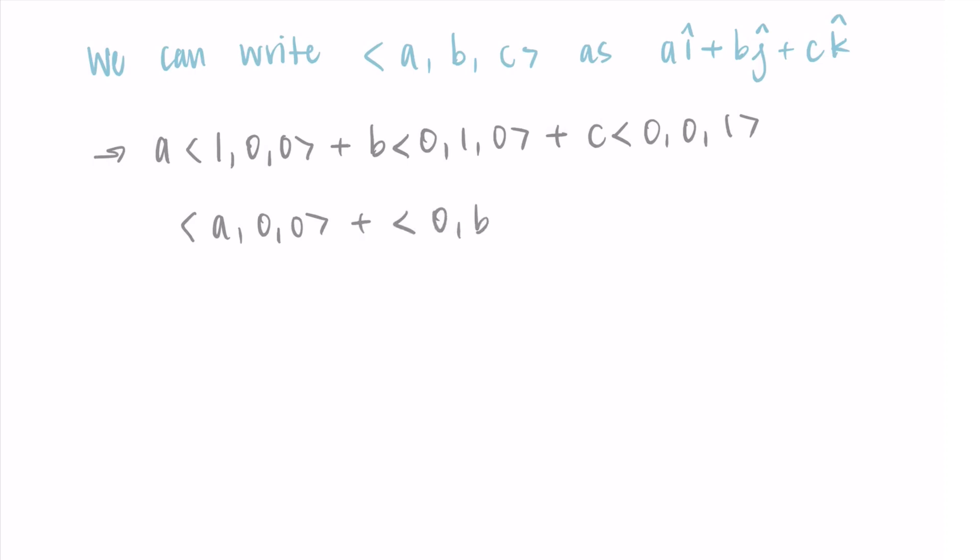So the whole reason we have these standard unit vectors is that it allows us to write the vector <a, b, c> as a sum. So we could write the vector <a, b, c> as a times i hat plus b times j hat plus c times k hat. Breaking it up in this way has a lot of applications and is often really helpful. So we just like having a way to decompose vectors into these standard unit vectors. To show why this works, let's try a times i hat plus b times j hat plus c times k hat. Then we distribute those constants, those numbers out front, the scalars. So we get <a, 0, 0> plus <0, b, 0> plus <0, 0, c>.